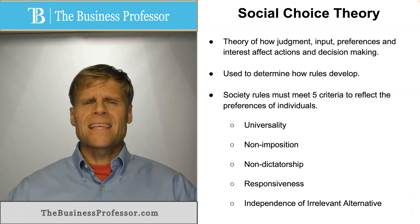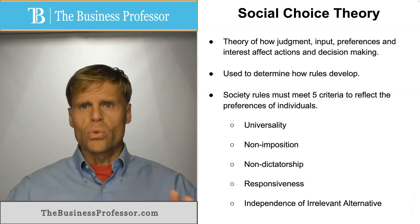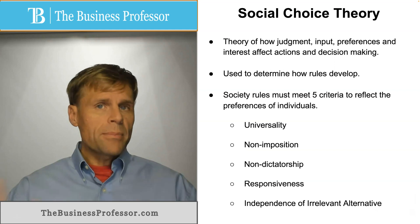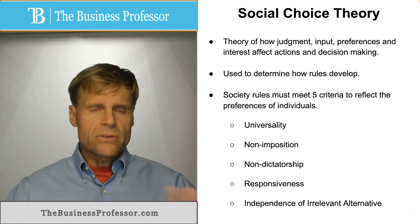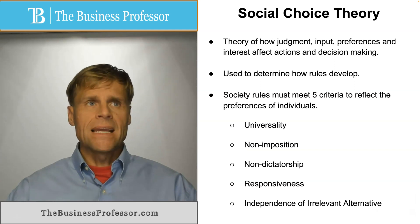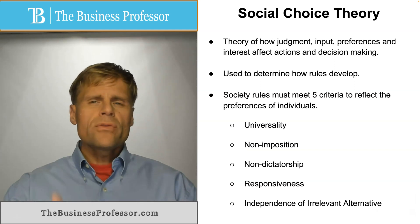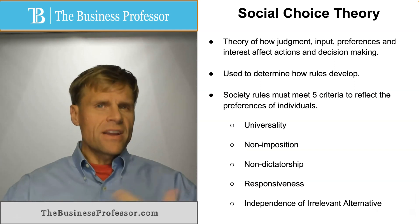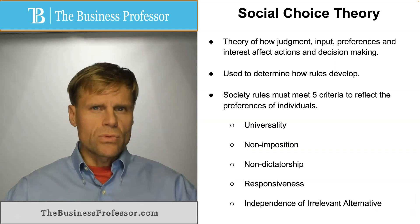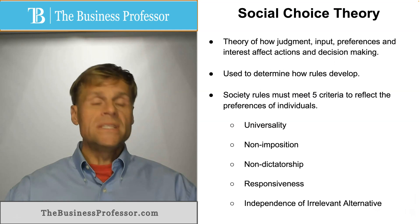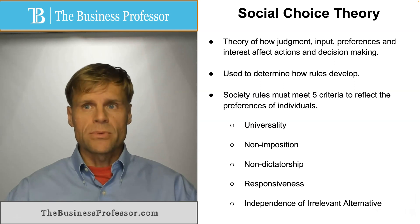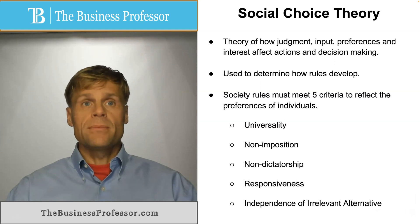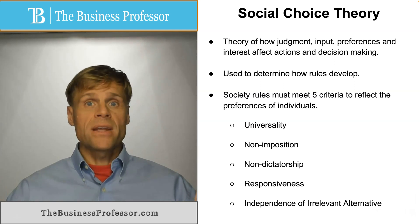This theory states that in order for a rule that is applicable generally to society to be a fair and just rule under democratic principles, it must meet five criteria.